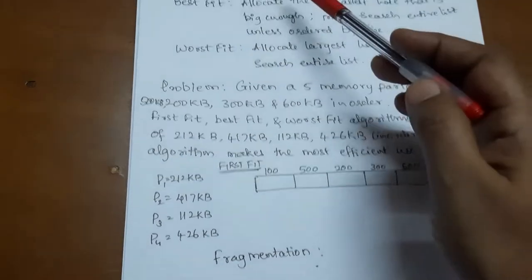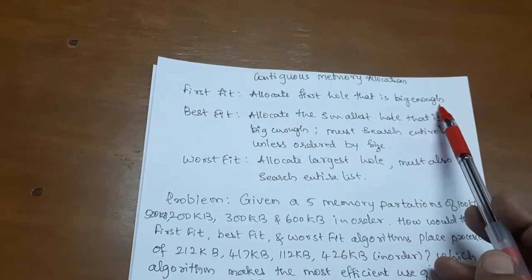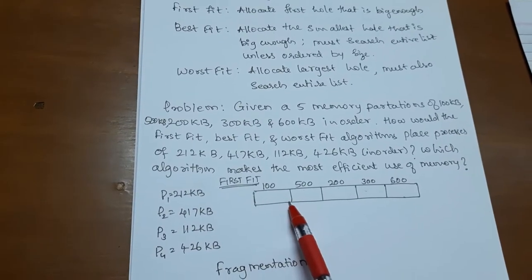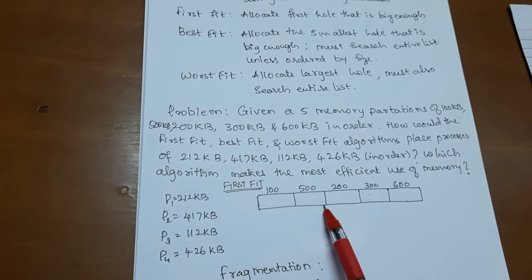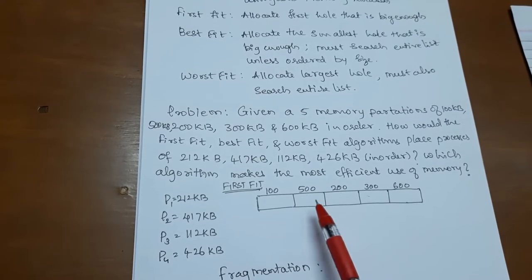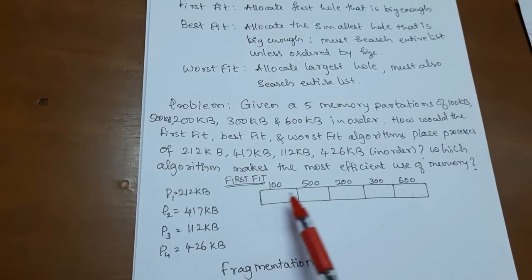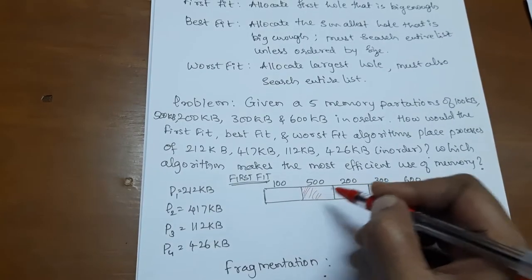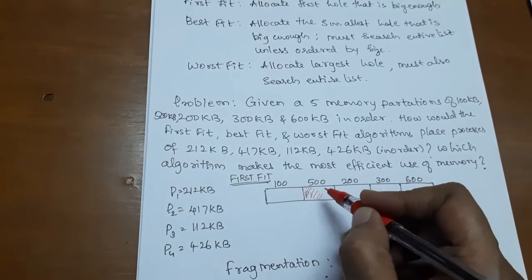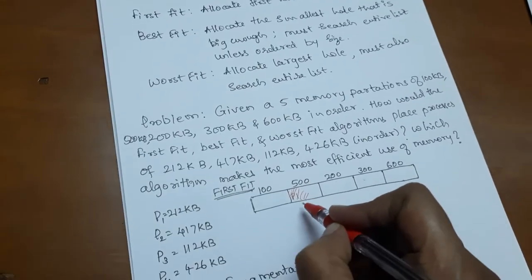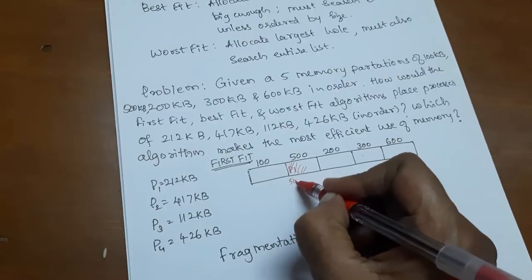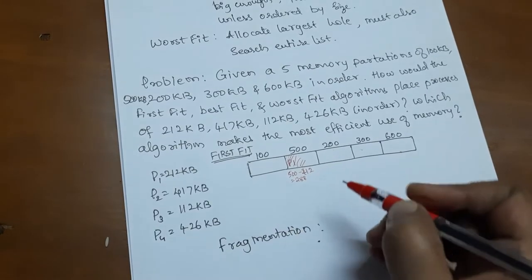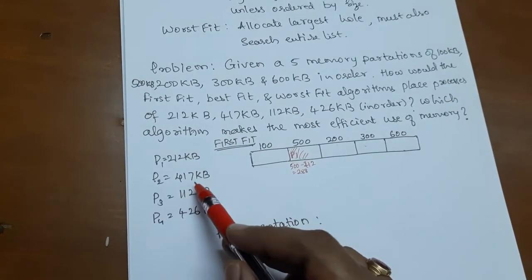As discussed, the first fit finds the first hole that is big enough. P1 size is 212 KB and the first hole is 100 KB, then next is 500 KB. So the first hole big enough to fit P1 is 500 KB, so P1 is allocated with this memory partition. The leftover memory is 500 minus 212, equal to 288 KB.